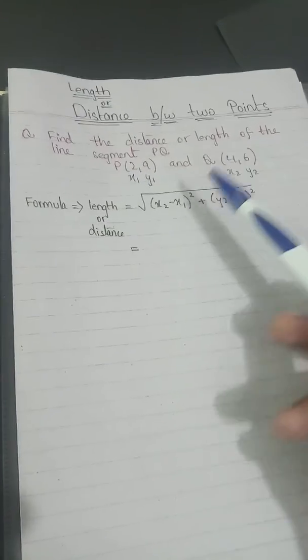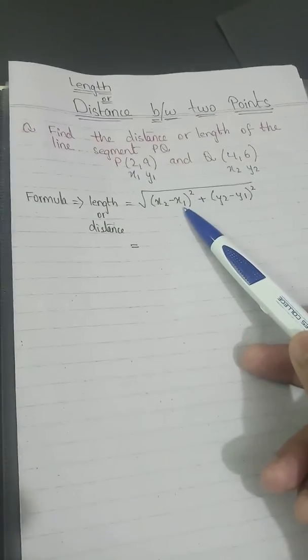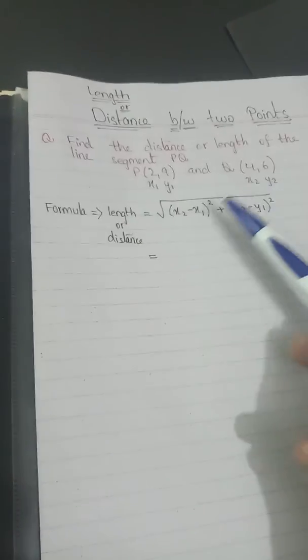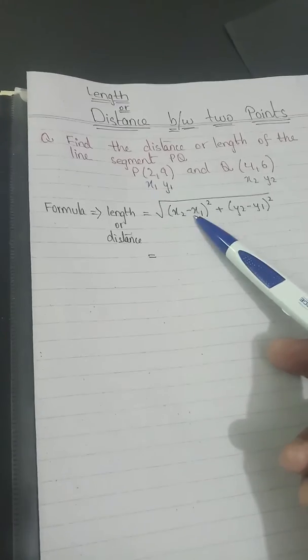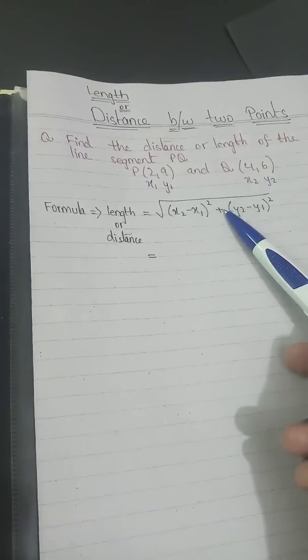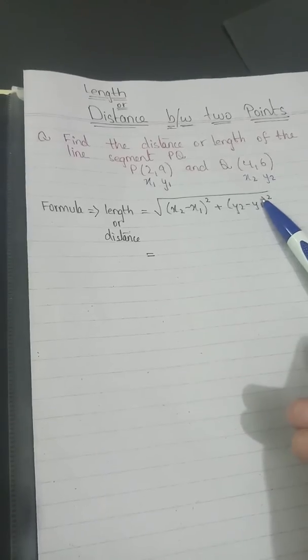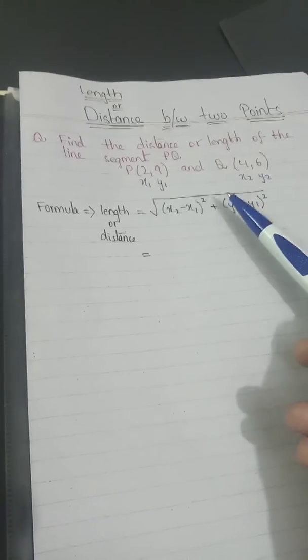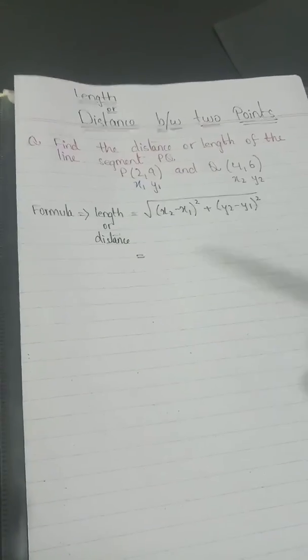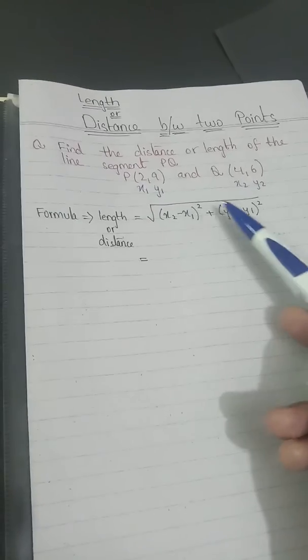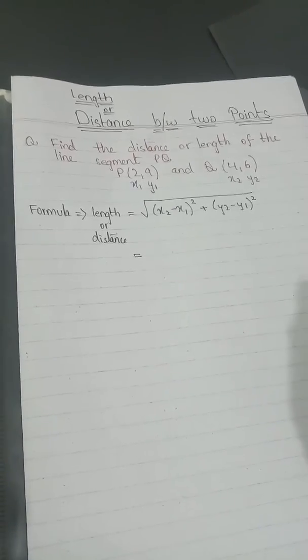We have a formula to calculate the length of a line segment or the distance between two points. The formula is: square root of (x2 minus x1) whole squared plus (y2 minus y1) whole squared. You have to memorize this formula and just put in the values of x1, x2, y1, and y2 to get the distance or the length of the line segment.